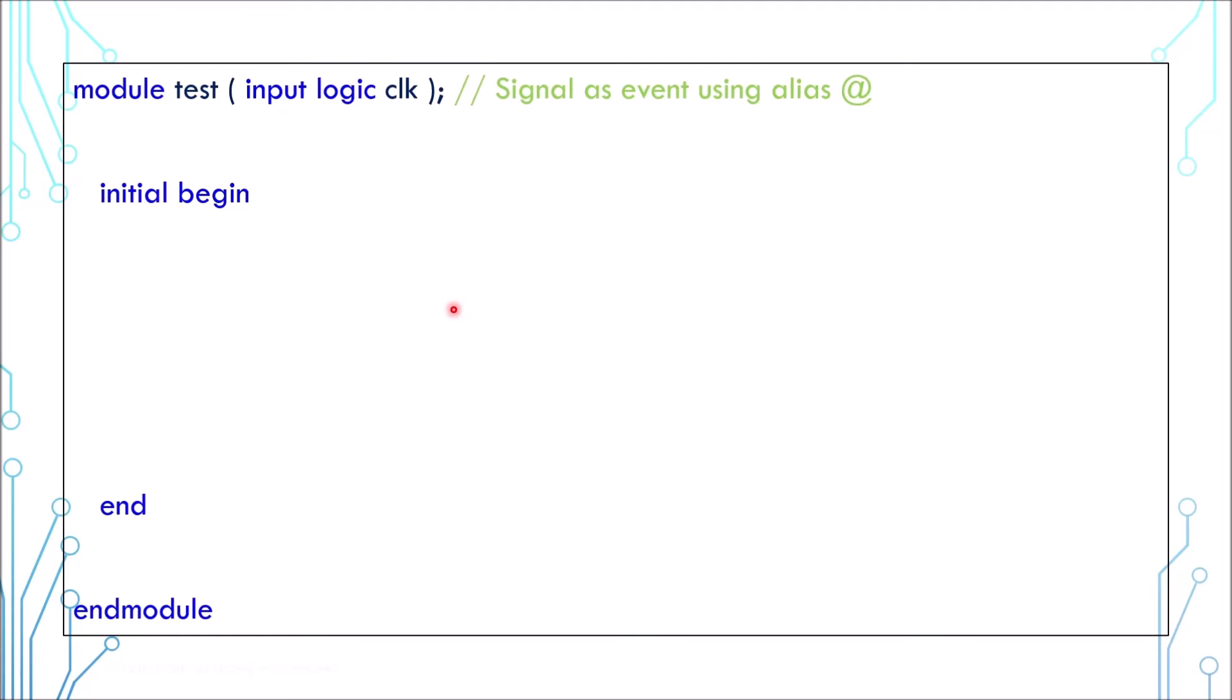Looking at this example, the module has an input clock. Let's assume this is how the clock behaves. You can use @(clk) to monitor any changes on the clock. You can use @(posedge clk) to monitor clock toggling from 0 to 1.